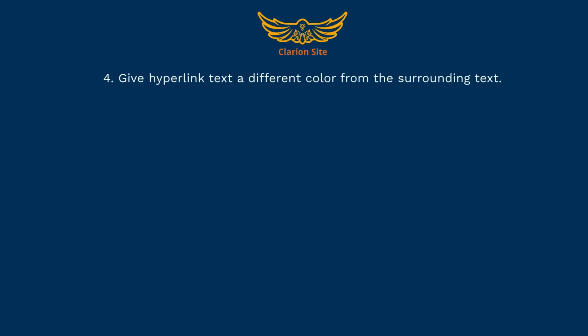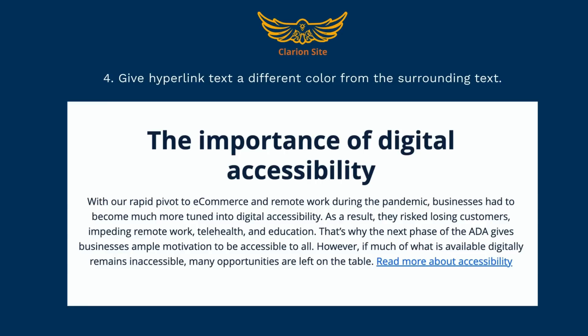Guideline 4: Give hyperlink text a different color from the surrounding text. In this example, the link text color is different from the surrounding text. This benefits sighted users by helping them identify the link within the text.